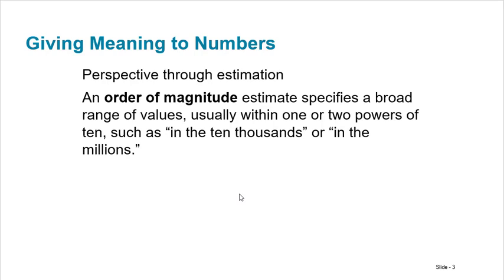When we start talking about estimation, an order of magnitude estimate specifies a broad range of values usually from 1 or 2 powers of 10. So when you talk about estimating something you want to at least be on the right order of magnitude. What that means is you don't know precisely what the number is but it's somewhere in the hundreds or somewhere in the thousands or somewhere in the tens of thousands. But you wouldn't say it's somewhere between 100 and a million. That's too big. So that's what it means to kind of be able to guess on an order of magnitude. It's this power of 10 idea.